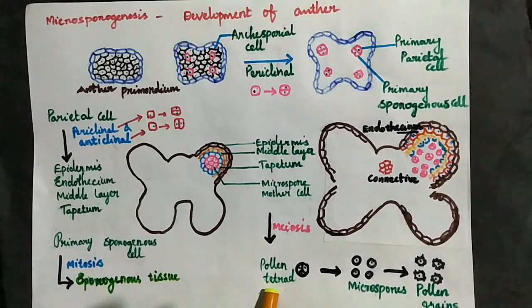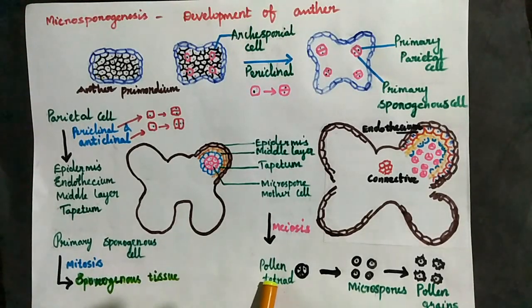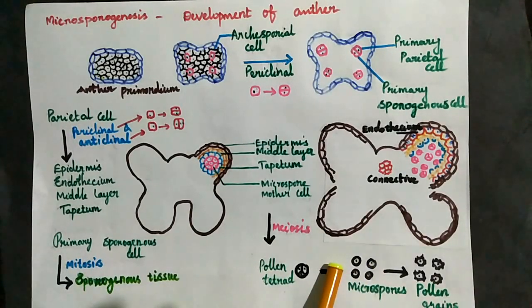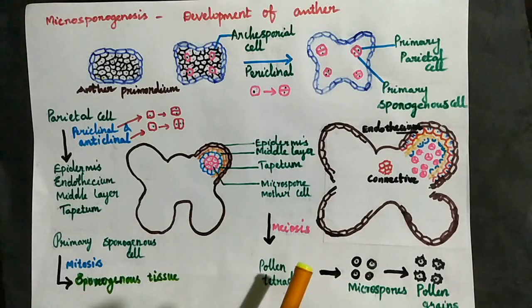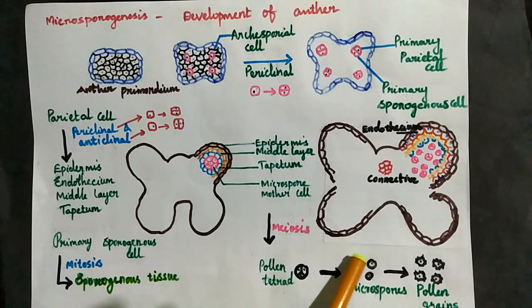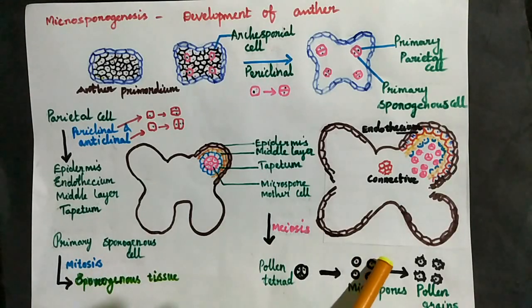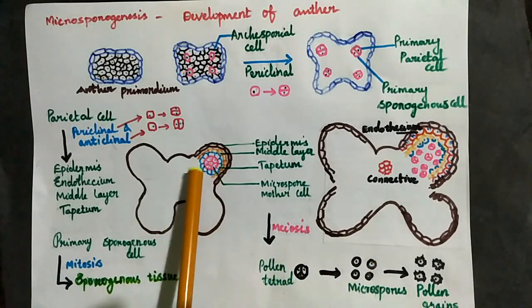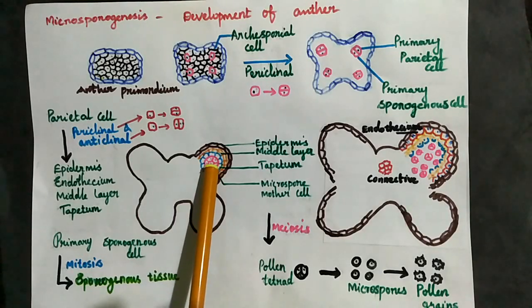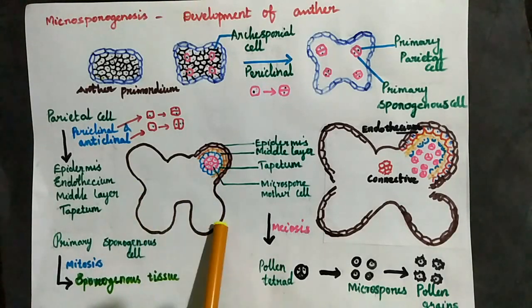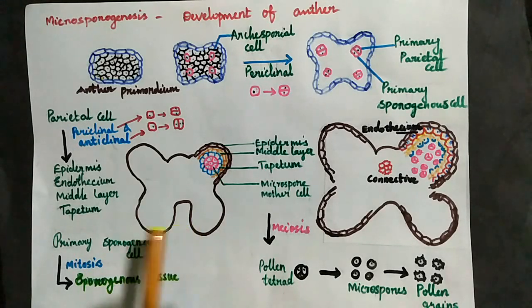First, at the beginning level, a tetrad is formed. Then the tetrad separates, and the four microspores are released. These microspores develop a wall — the outer layer called the exine and the inner layer called the intine — to form pollen grains. The microspores develop into mature pollen grains.